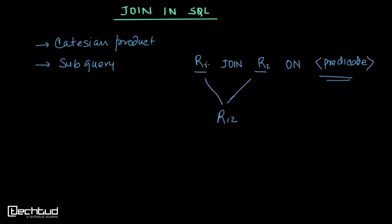After the join, we will get a resulting relation R12 which will have attributes from both R1 and R2 in order. For example, if R1 has attributes A and B, and R2 has attributes A and C, and we join on attribute A, then the order of attributes in R12 will be: A, B, A, C.